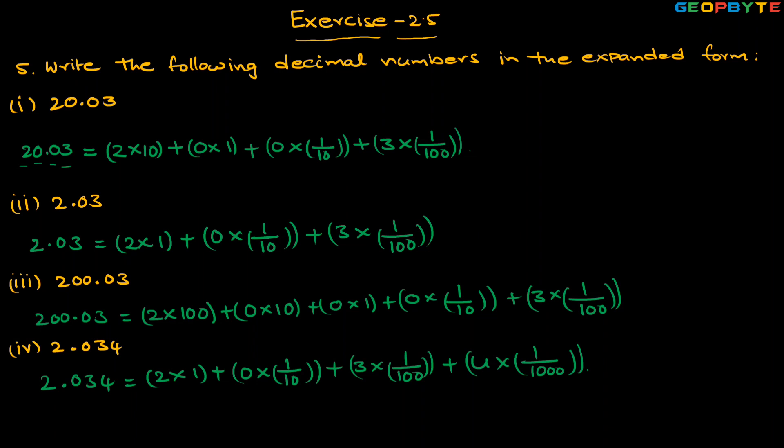In the fifth question, to write the expanded form of a decimal number, we identify the position of each digit and multiply by its place value. For example, two at the tens place is multiplied by 10; zero at the ones place is multiplied by 1; zero at the tenths place is multiplied by 1/10; and three at the hundredths position is multiplied by 1/100.